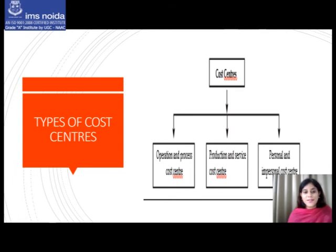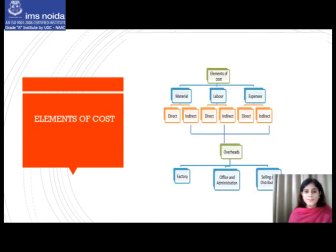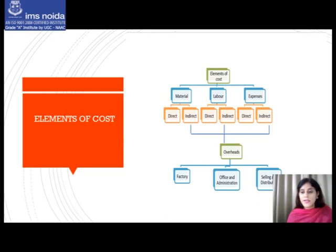Next we will deal with the elements of cost. There are three main elements of cost: material, labor, and expenses, and they are sub-classified into direct and indirect. We will be discussing the elements of cost in detail in our next video. Thank you so much.